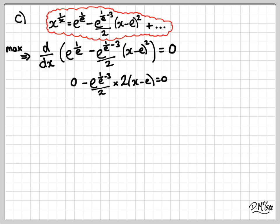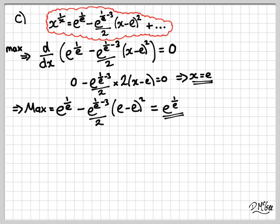And of course, what value of x makes this 0 is simply x is equal to e. So we've now got x is equal to e. We're going to put that back into the right-hand side of our series expansion.